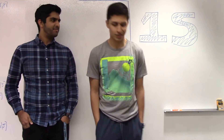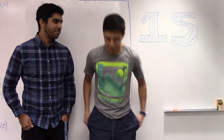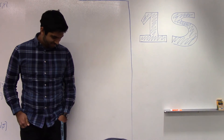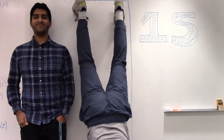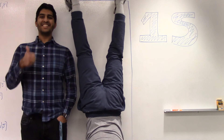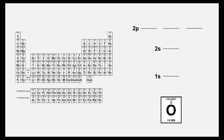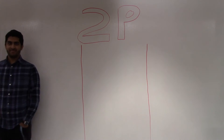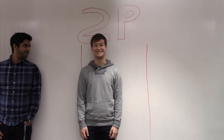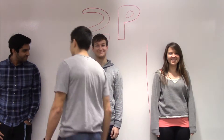Number two: the Pauli exclusion principle — two electrons fill each orbital, and those electrons have opposite spins, represented by two arrows facing opposite directions. So we fill one, two, three, four electrons. Now we encounter the degenerate pair of orbitals: you have three 2p orbitals with the same amount of energy. So we need to use Hund's rule: when orbitals are degenerate, they are filled one at a time before doubling up.